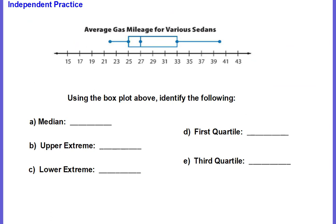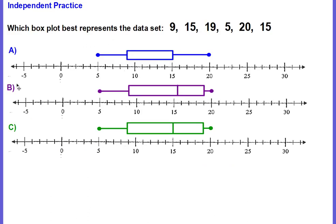Now you're ready for your independent practice. The first practice: a box and whisker plot shows the average gas mileage for various sedans. Use the box plot to identify the median, the upper extreme, the lower extreme, the first quartile, and the third quartile. For practice problem two, determine which box plot best represents the given data set — find your five data components and match the correct box plot.